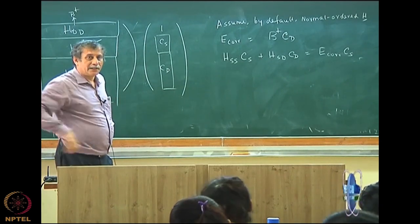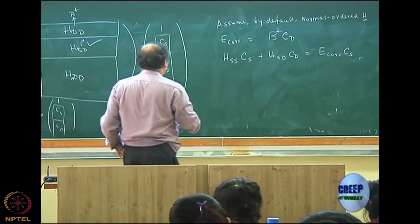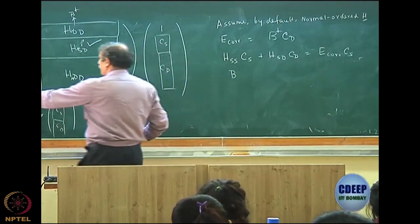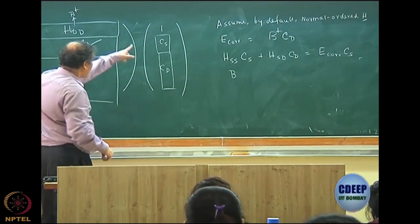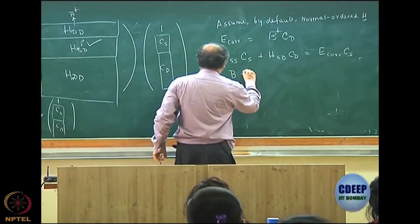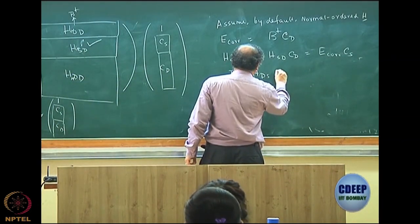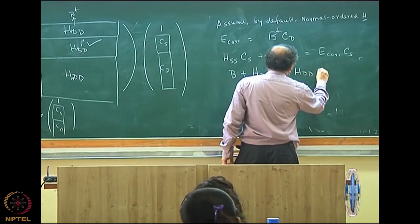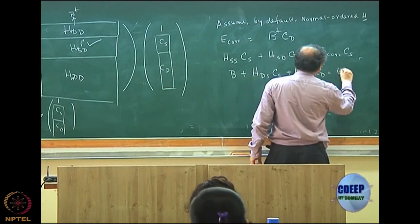The last set of equations is HD0, which is my B. So B into 1, so B plus HDS into CS plus HDD into CD equal to E correlation CD.